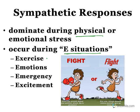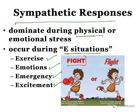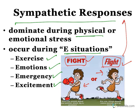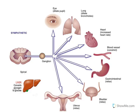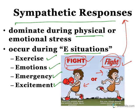Sympathetic responses dominate during physical or emotional stress — exercise, emotions, emergency, and excitement. These are also known as the fight-or-flight response. When the body prepares to fight or run away, it needs energy. Sympathetic activation causes pupil dilation (mydriasis) and lung dilation (bronchodilation), allowing more oxygen to be inhaled and more ATP to be synthesized.